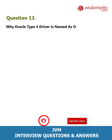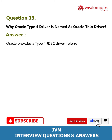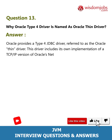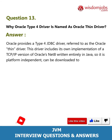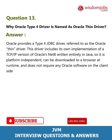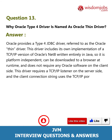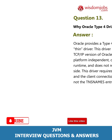Question 13: Why is the Oracle Type 4 driver named the Oracle Thin driver? Answer: Oracle provides a Type 4 JDBC driver referred to as the Oracle Thin driver. This driver includes its own implementation of a TCP/IP version of Oracle's Net8, written entirely in Java, so it is platform independent, can be downloaded to a browser at runtime, and does not require any Oracle software on the client side. This driver requires a TCP/IP listener on the server side, and the client connection string uses the TCP/IP port address rather than a names entry for the database name.